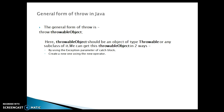You can get this throwable object in two ways. First, by using the exception parameter of the catch block, and second, create a new one using the new operator. You have multiple classes which represent exception handling — like Exception, IOException, and SQLException — and you can create an object of these classes using the new operator.